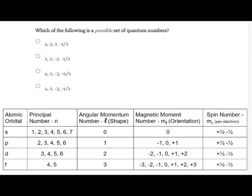Same question, different set of numbers. Let's focus on the L quantum number to position ourselves in the table. The first set has L = 3, placing us in F. The proposed N = 4, M sub L = positive two, and M sub S = negative one-half are all valid. So the first set is the correct answer. The second set has L = 2, but N = 2 — there is no N of two for an L of two, so that set is invalid.